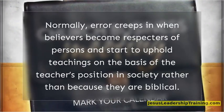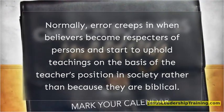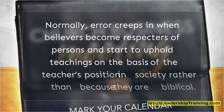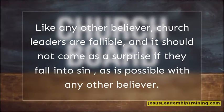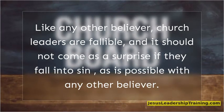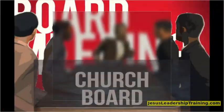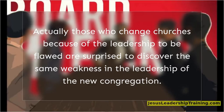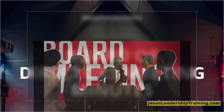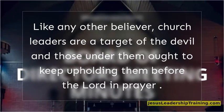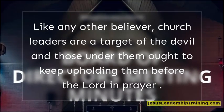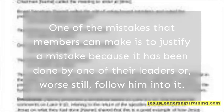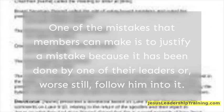Error creeps in when believers become respecters of persons and uphold teachings based on the teacher's position in society rather than because they are biblical. Church leaders are fallible, and it should not come as a surprise if they fall into sin. One of the mistakes members can make is to justify a mistake because it has been done by one of their leaders, or worse still, follow him into it.